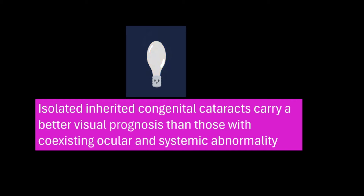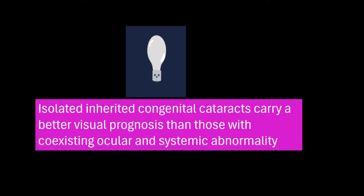More than 15 genes have actually been identified for pediatric cataracts, but they mostly relate to the cataract proteins like the crystallins and the connexins, which is a gap junction protein. These isolated inherited congenital cataracts carry a much better visual prognosis compared to cataracts associated with any other ocular or systemic abnormality. These genetic cataracts do not have any other systemic or ocular anomaly — they just have the cataract.